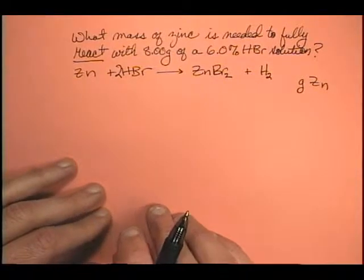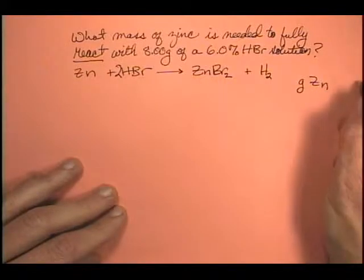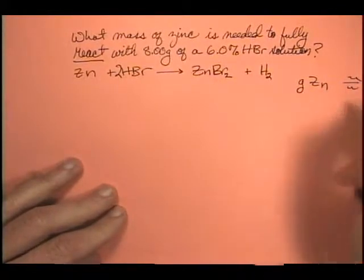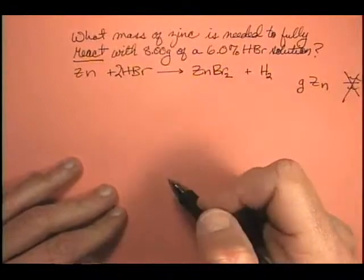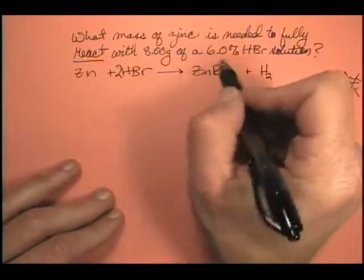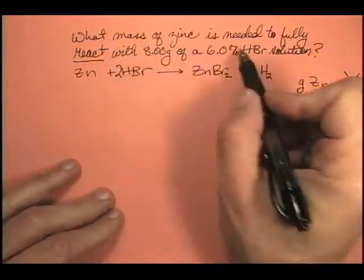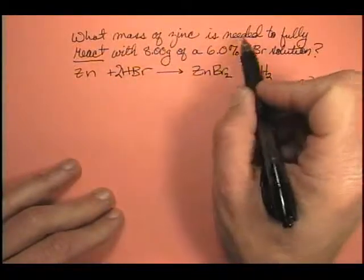We're ready to hop on that stoichiometry train. Got grams of zinc. Notice it's not something per something. So we're not going to start with something per something. Well, what do we have? We have eight grams. That's not something per something. And we have 6.0% HBr.